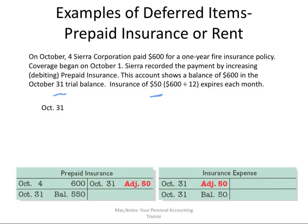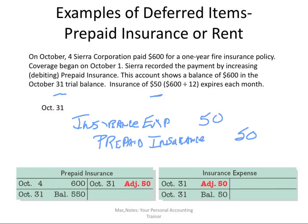So therefore, what we do is you always debit the expense first — so it would be insurance expense $50 — and reduce the asset. Credit prepaid insurance $50.